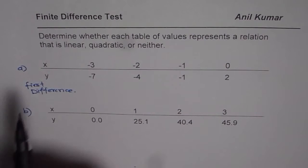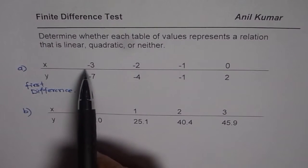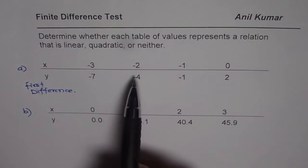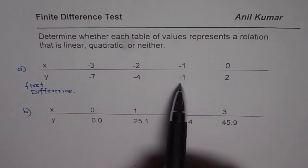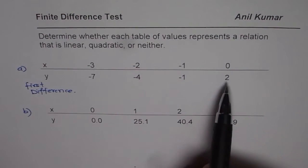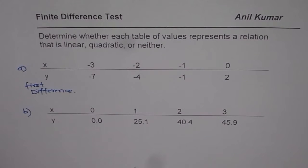Data in part A is for x and y values. For minus 3, we have minus 7. At minus 2, y is minus 4. For minus 1, y is minus 1. And 0 and 2 are the last coordinate points.